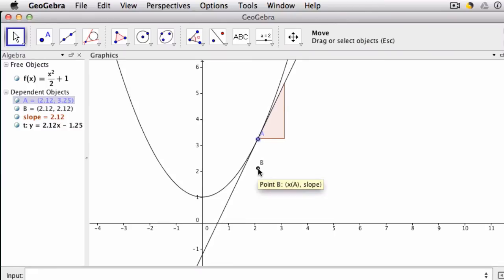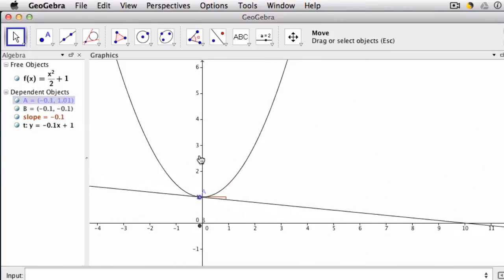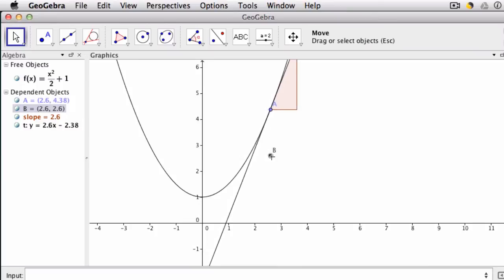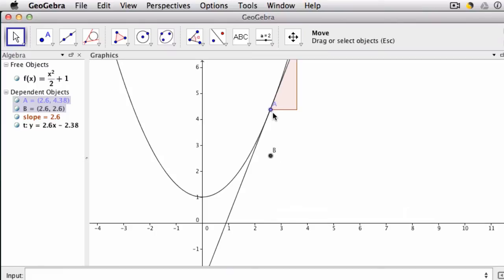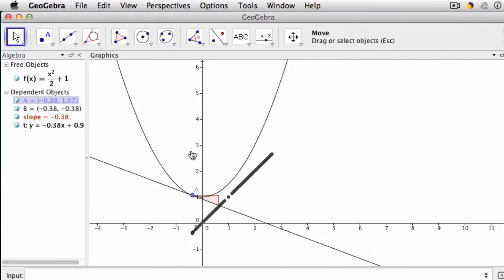And one thing that's fun is to think about, as I scroll along this parabola, what kind of path will B follow? And if we're not able to see that, we can right-click at point B, turn the trace on, and now this is nice. As I move point A, B goes along and forms a trace of its path.